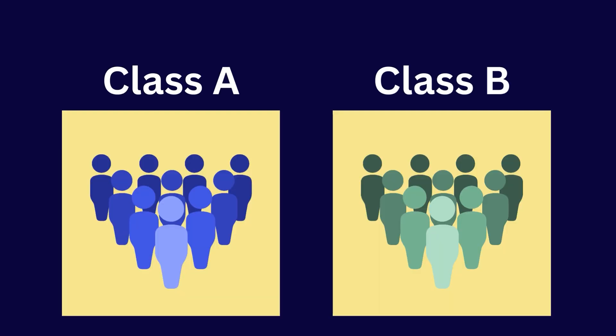Independent sample t-test is a statistical method used to determine if there is a significant difference between the means of two independent groups. Imagine you want to know if there is a difference in exam scores between two classes, class A and class B.